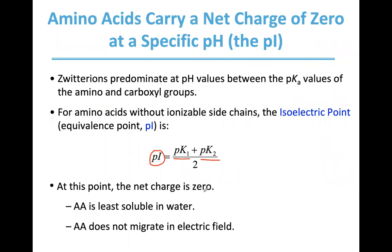The zwitterion has a total charge of zero, and the amino acid will be least soluble in water at this pH. Amino acids normally form hydrogen bonds with water through their charged amino and carboxylate groups, but at the pI — when the net charge is zero — solubility is lowest. The amino acid also will not migrate in an electric field because it has no charge and no reason to move toward either electrode.